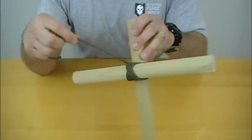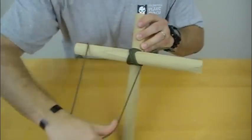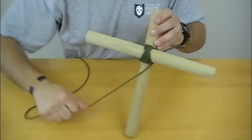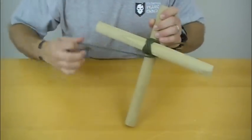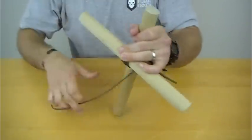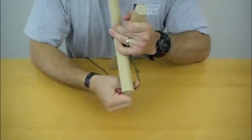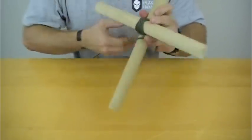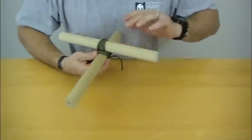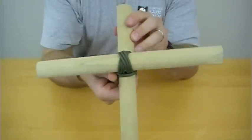Now once you have that, you're going to do frapping turns, which is turning around that main post three times. Make sure they get tight, and then you'll wind up with something that looks like this.